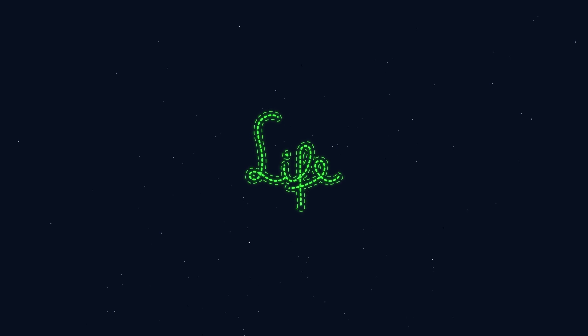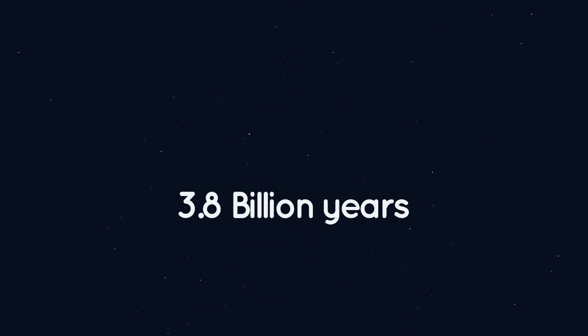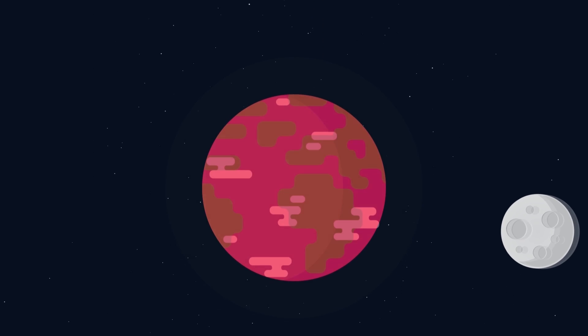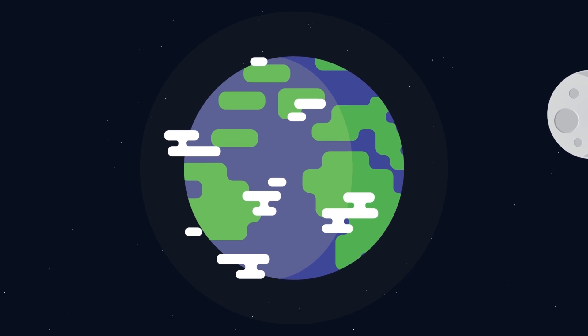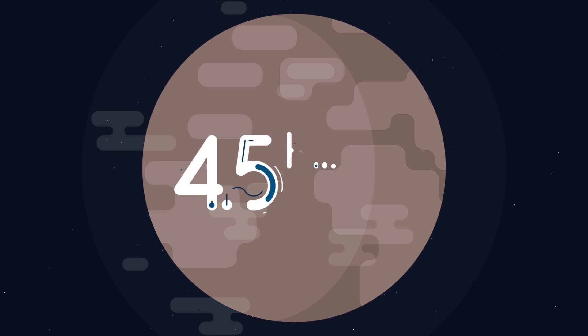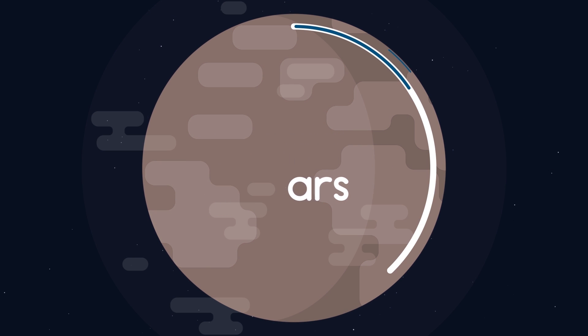Did you know that life on Earth has been around for 3.8 billion years? During those times, evolution on Earth has changed dramatically. Let's break down the evolution of the Earth's 4.5 billion years into a 24-hour timeline.